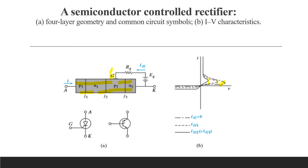In most SCRs the delay time is less than a few microseconds and the required gate current for turn-on is only a few milliamperes. Therefore, the SCR can be turned on by a very small amount of power in the gate circuit. On the other hand, the device current can be many amperes and the power controlled by the device may be very large.